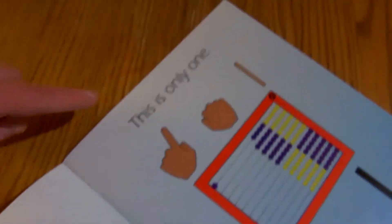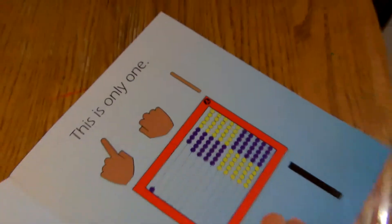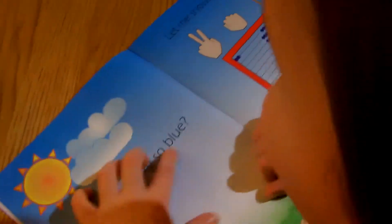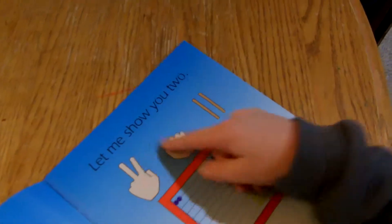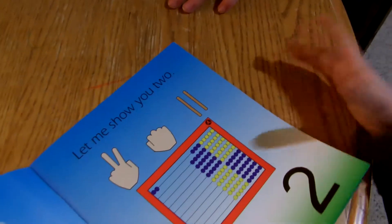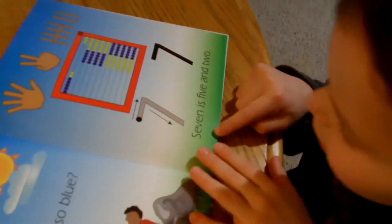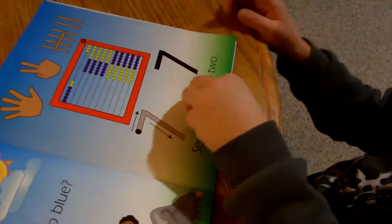Yellow is a sun, this is only one. Why is the sky so blue? Let me show you two. Why is the sky so blue? Seven is five and two.